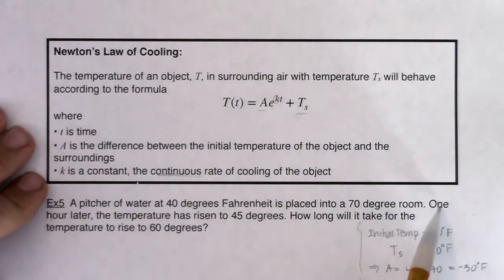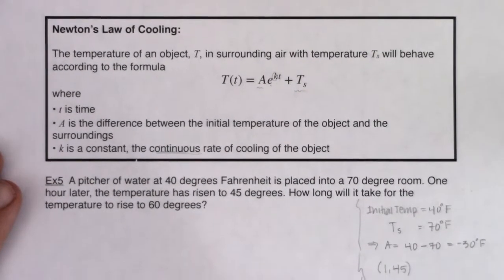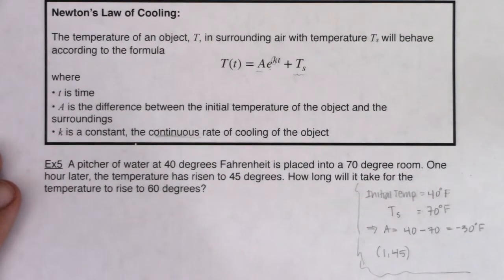And then they also give me an ordered pair here. They say one hour later, the temperature is risen to 45 degrees, right? I see little t, capital T. So I'm just going to take note that I have the ordered pair 1 comma 45. Let me scooch this up. So we'll keep the equation in view. And now you can see all my little scribble work here.